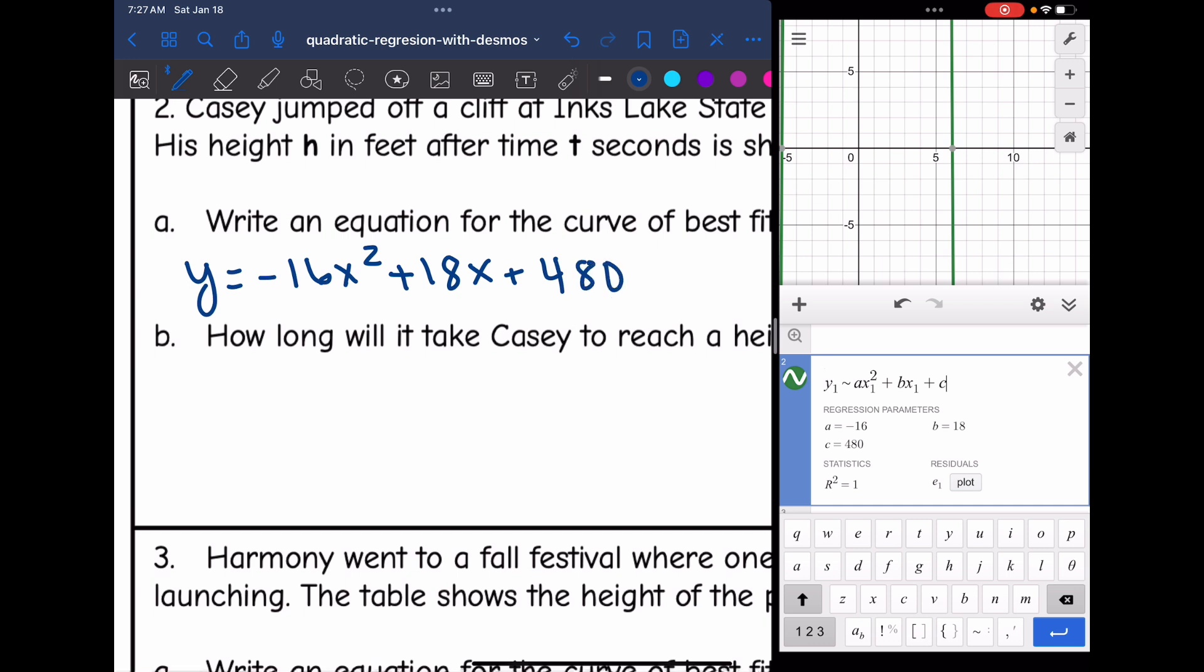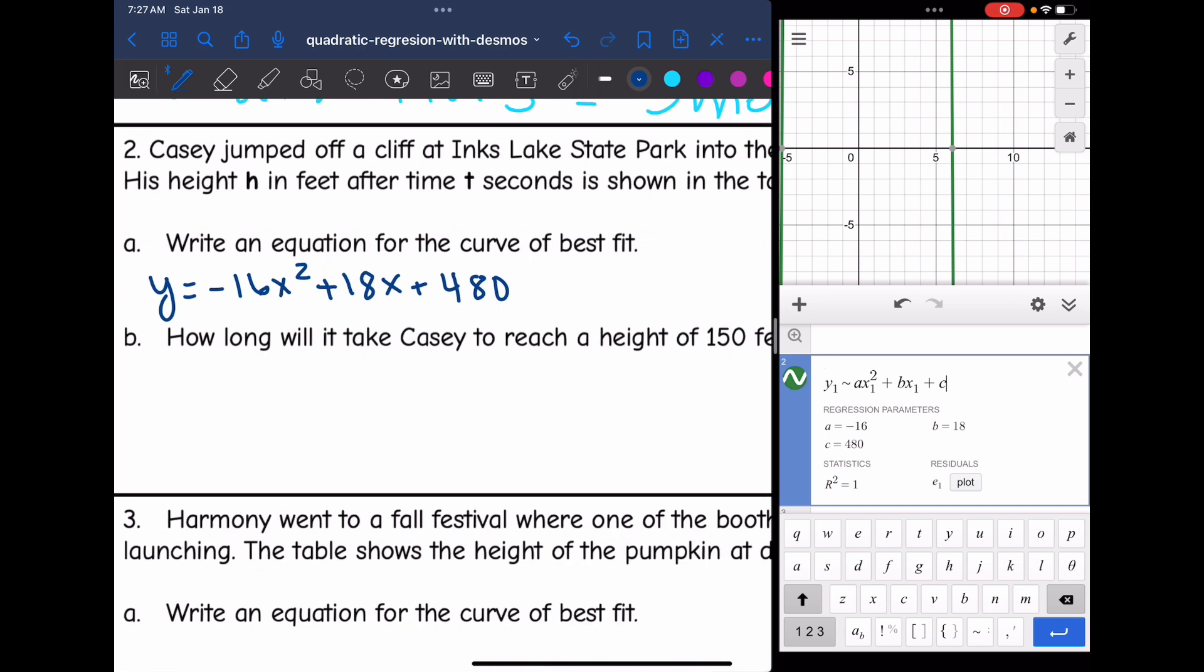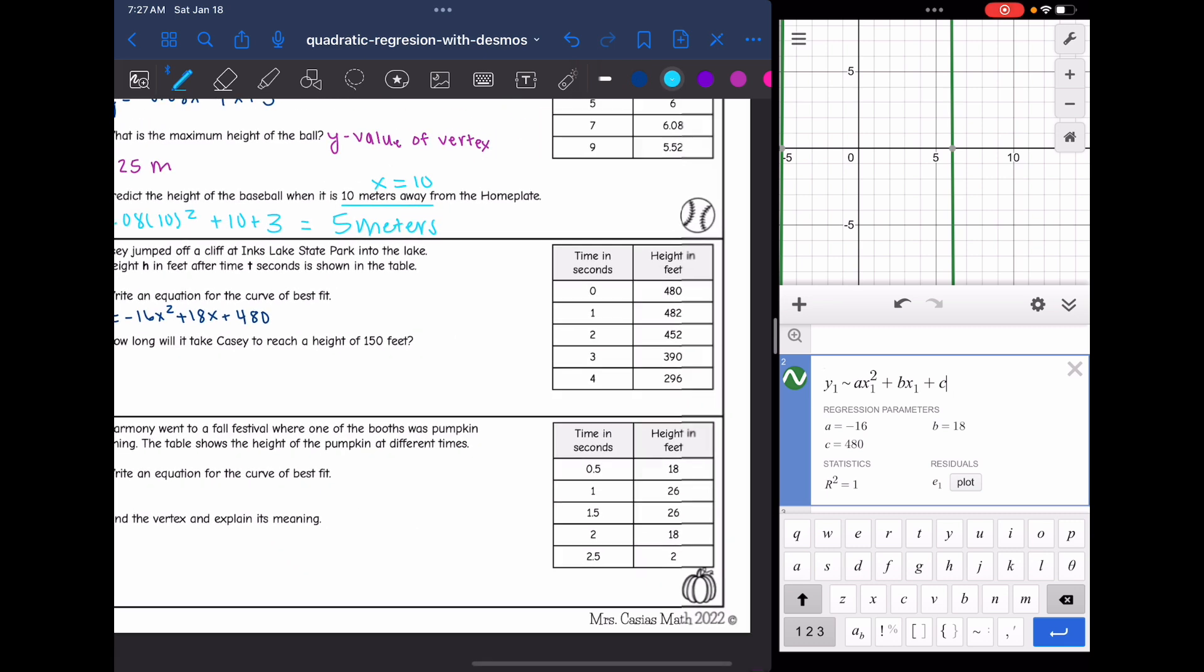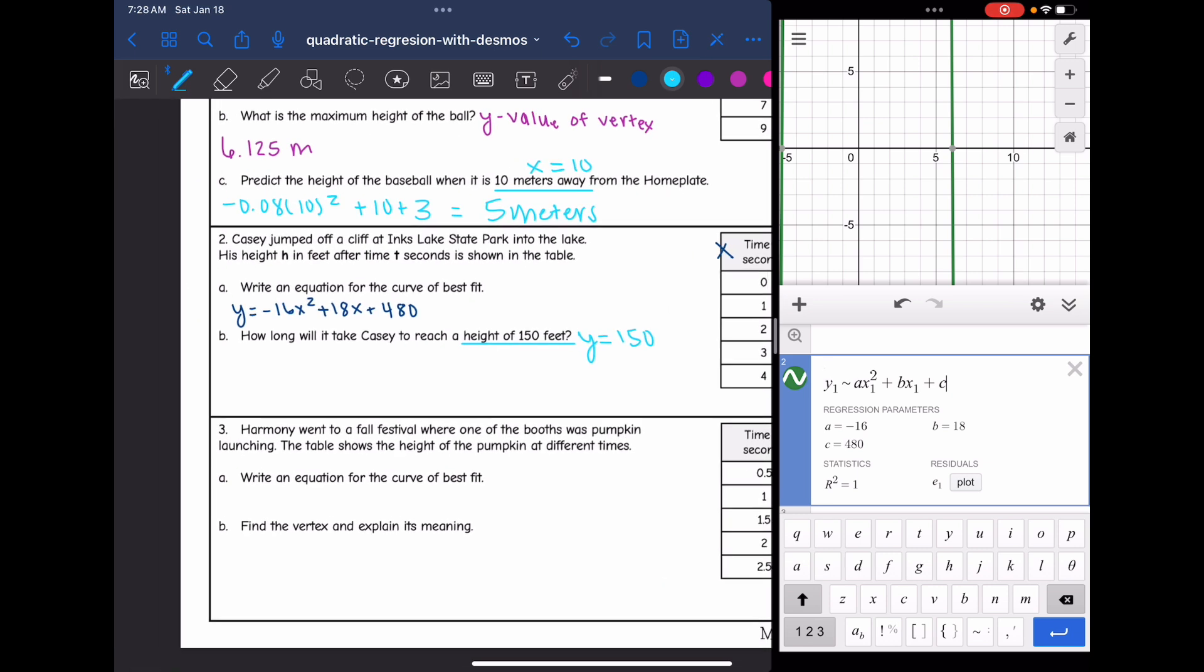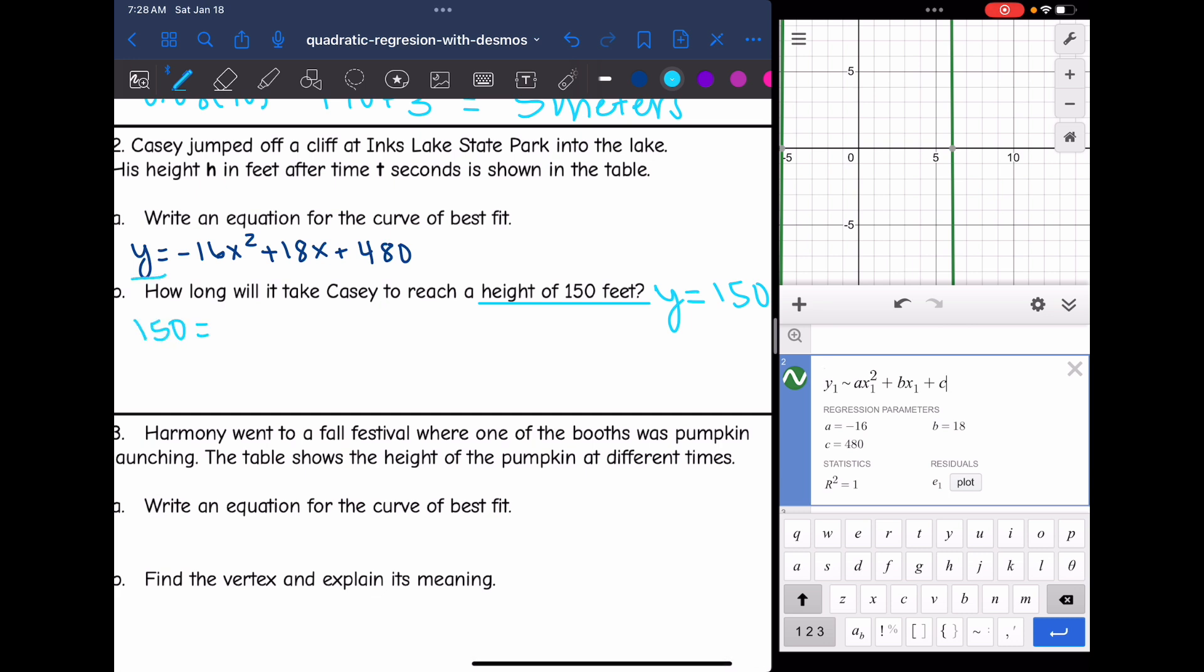And then the next question says how long will it take Casey to reach a height of 150 feet? So it is asking us for an x value and they gave us a y value, the height in feet. So they're wanting us to replace y in our equation with 150 and solve for an x value. So you have a couple of ways you could do this. You could set it equal to zero and solve it by quadratic formula. You could try to factor it. You could use completing the square. Or we can set it equal to zero just by subtracting that 150. And I get zero equals negative 16x squared plus 18x plus 330.